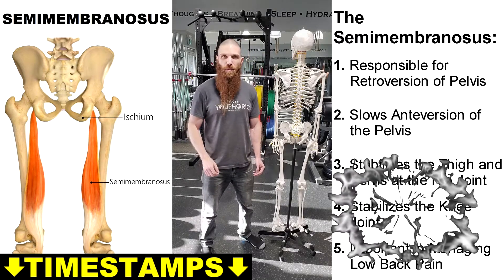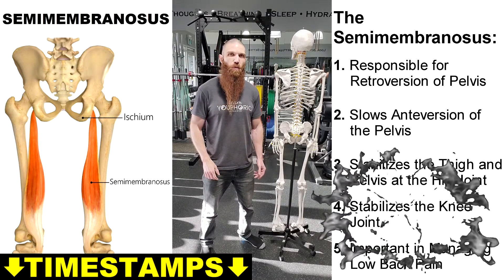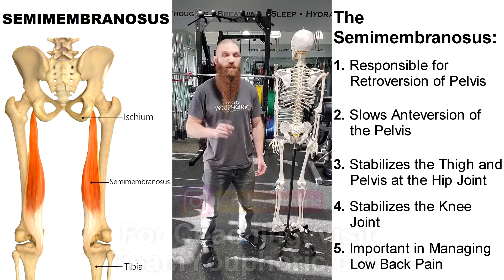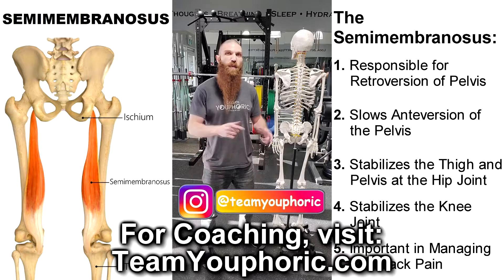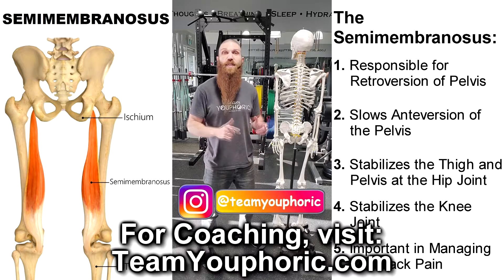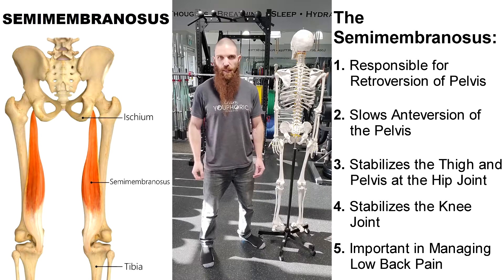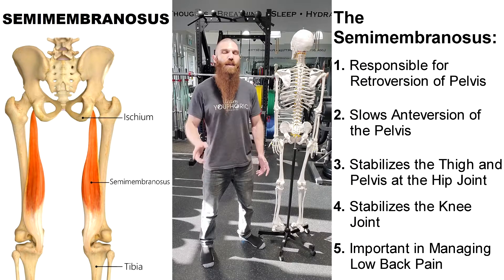The semimembranosus is one of the muscles in the hamstrings group, and as with all of the hamstring muscles, one of its main actions is going to be retroversion of the pelvis, or posteriorly tilting the pelvis. This makes it a very important muscle, especially in managing something like low back pain.